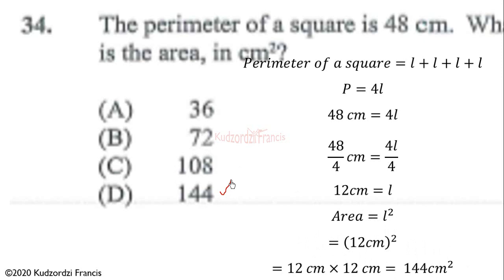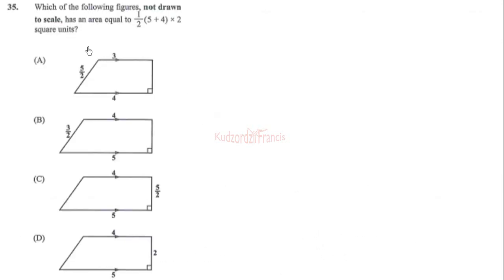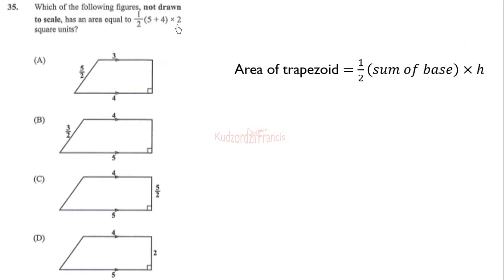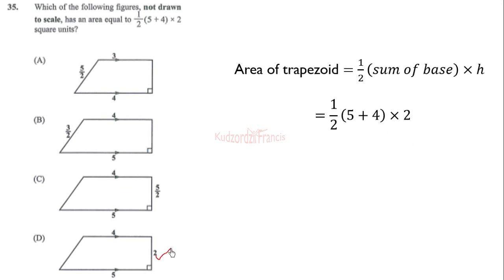Question 35: which of the following figures has an area equal to one-half of (5 + 4) times 2? We know the area of a trapezoid is half times the sum of the parallel sides times the perpendicular height. The bases are 5 and 4, so we look for the trapezoid with those bases. To distinguish between options, the perpendicular height must be 2. Therefore the correct answer is option D.